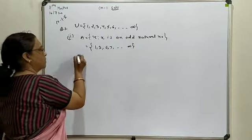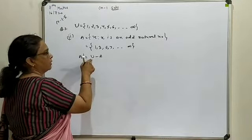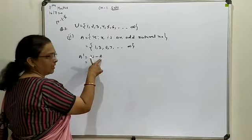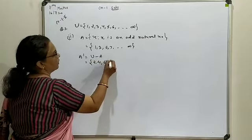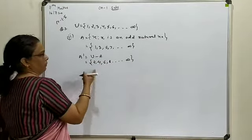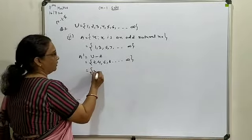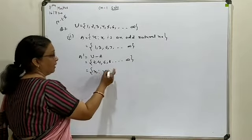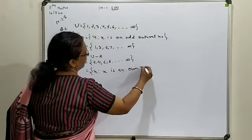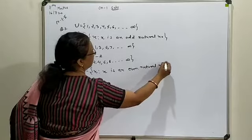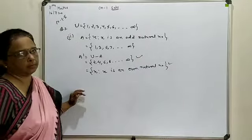Now, complement of set A, written as A', equals U minus A — meaning all odd elements are to be cut from the universal set. You are left with only even elements: 2, 4, 6, 8, and so on up to positive infinity. The same answer can be written in statement form as {x : x is an even natural number}. Both methods can be used to find the respective complement.